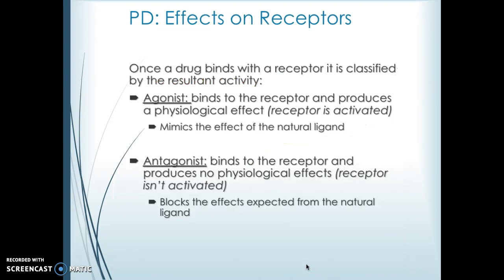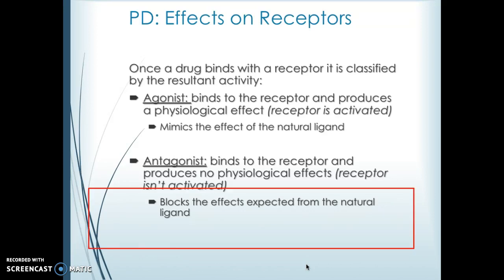Once a drug binds to its receptor, it is classified by the activity discussed: an agonist will activate the receptor and mimic the natural ligand, while an antagonist will bind to the receptor and block the effects of the natural ligand.